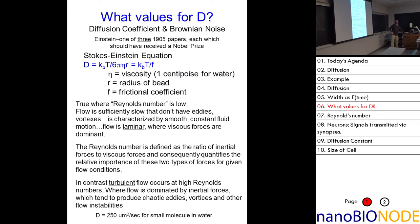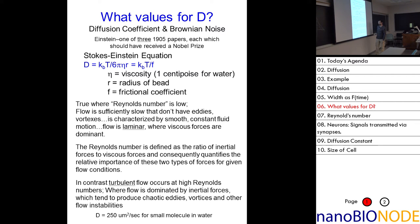You can calculate what D is — about 250 microns squared per second for a small molecule in water.